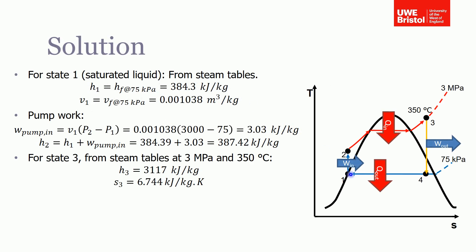For state one, that's quite easy. We know the properties of the fluid here — it's at 75 kilopascals, on that 75 kilopascal pressure line, so we can just read that straight from the steam tables. The enthalpy at point one is the enthalpy of saturated liquid at 75 kilopascals, which gives us 384 kilojoules per kilogram.